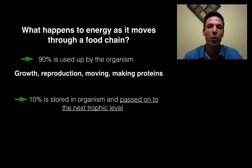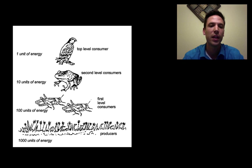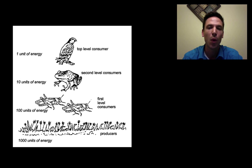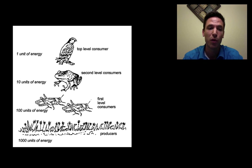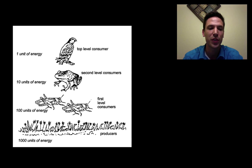Let's look at an example food chain. If our producers make 1,000 units of energy through photosynthesis, how much energy is left when we get to our first-level consumers like the grasshoppers? 10% of 1,000 is 100 — just move the decimal over once to the left to get 100 units. For our frogs that eat the grasshoppers, move the decimal over one more: that's 10 units. Then 10% of 10 is only 1 unit of energy when we get to our top-level consumer. 90% gets used up each time, and only 10% moves on.